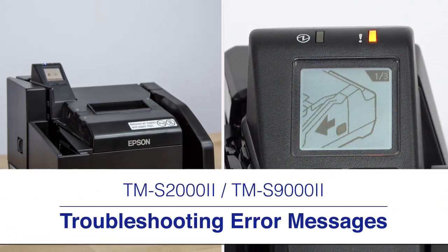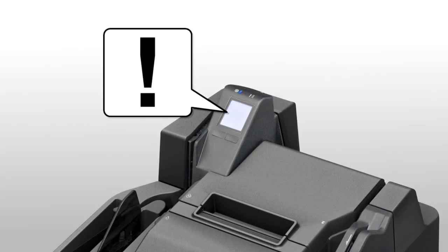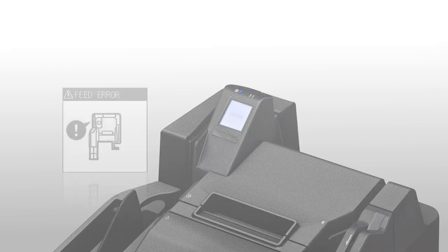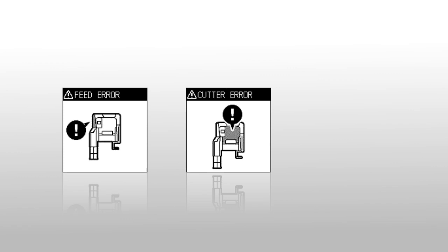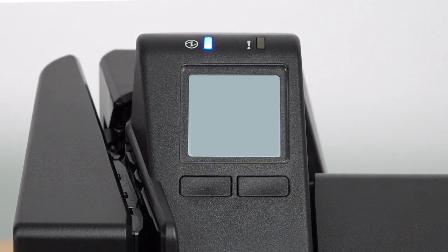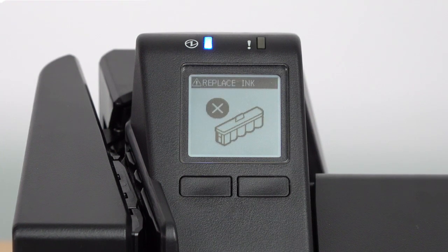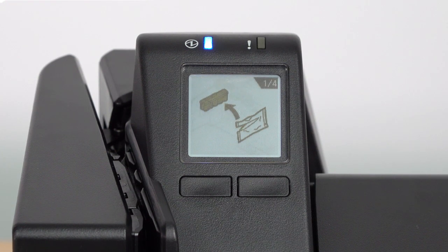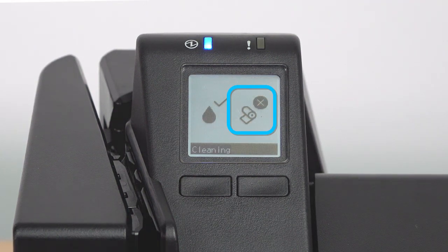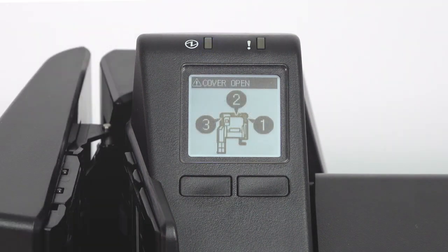When your product encounters a problem, it displays an error message on its LCD. Recoverable errors indicate problems that you can resolve. The LCD displays instructions on how to proceed. Examples of recoverable errors are replace ink, paper out, and cover open.